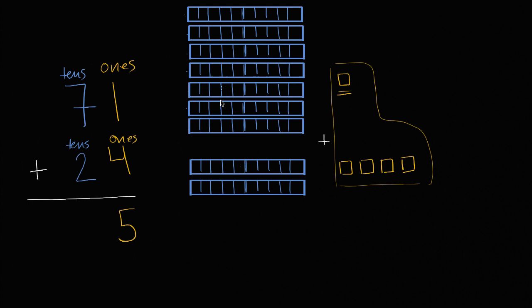And then when you look at the tens, seven tens plus two tens. Well, if you combine all of these together, you are going to have nine of these groups of ten. You're going to have nine tens.